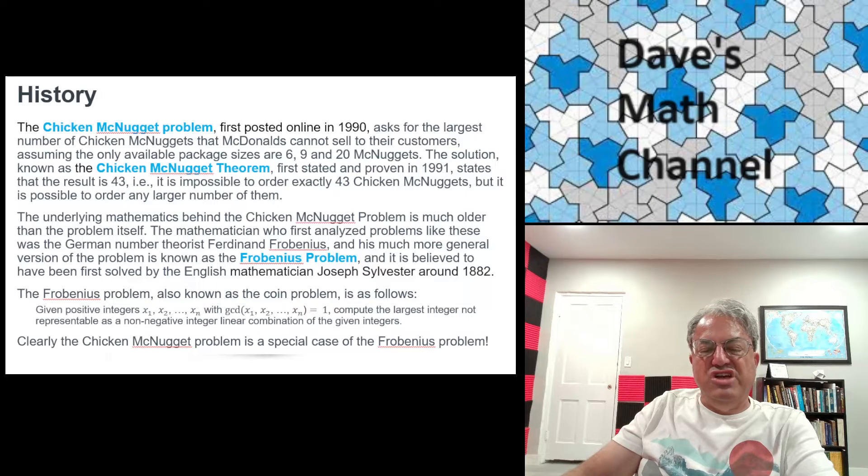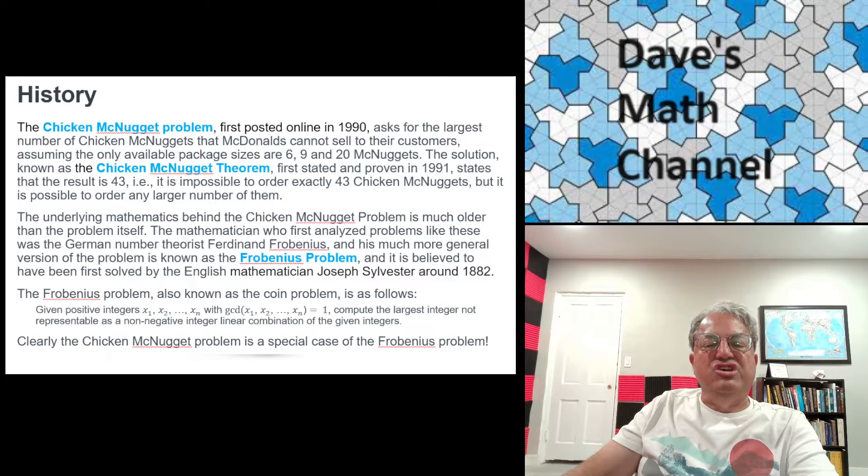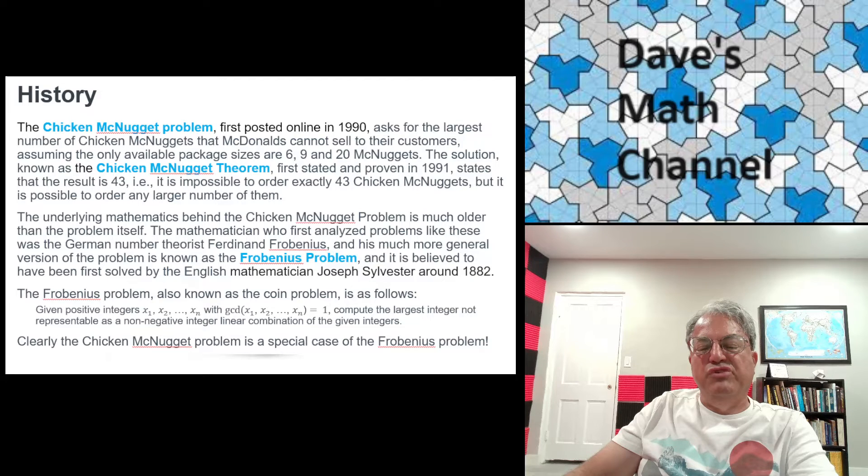I'm sure a lot of customers are wondering, how many can I buy? How many exact numbers can I buy? So that's why this became known as the Chicken McNugget theorem, the result, even though the problem was solved a long time before. Anyway, that's just a little bit of history.